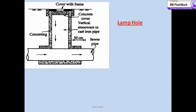Another appurtenance is the lamphole. Lampholes are small openings on a sewer to permit the insertion of a lamp into the sewer. The lamp light is then viewed from the upstream as well as the downstream manhole. The obstructed light confirms the obstruction of the sewer. Generally these lampholes are made of cast iron or vertical stoneware pipe and are provided with a cover. Whenever inspection is required, this cover is opened and the lamp is lowered.